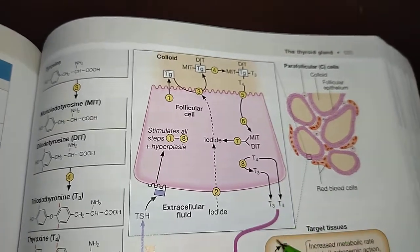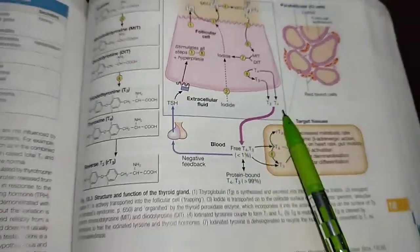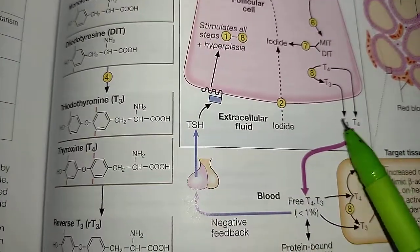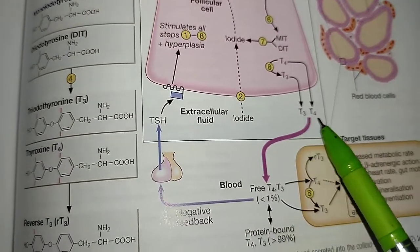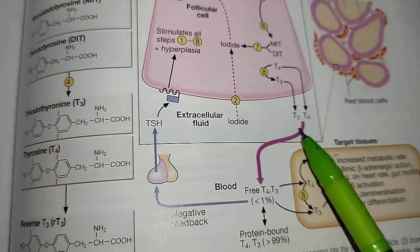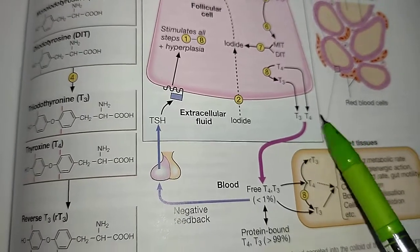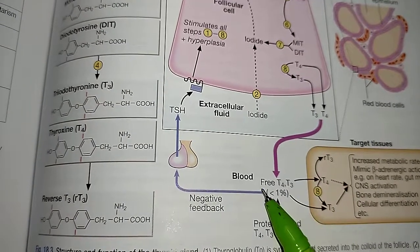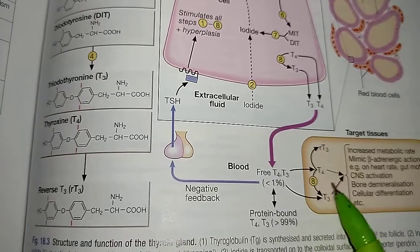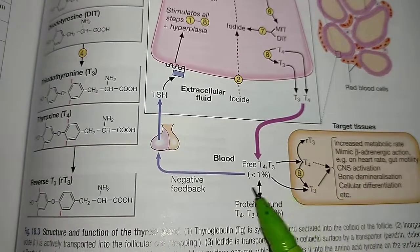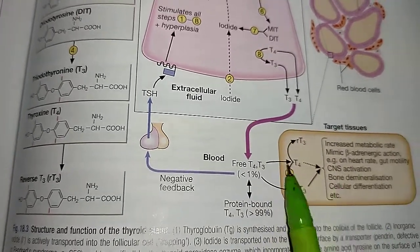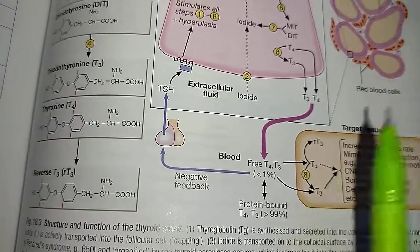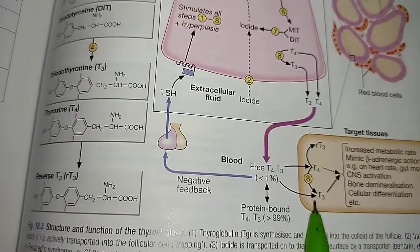The free T3 and T4 — triiodothyronine and tetraiodothyronine — are released into the blood. T3 is the most active form, and T4 is ultimately converted into T3. These hormones then act on the target tissues. This completes the synthesis of thyroid hormone.